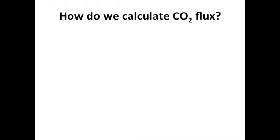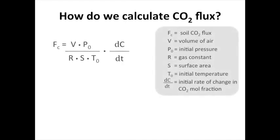Once we have our total volume, we are ready to calculate our CO2 flux. How is this done? The equation looks like this. Fc is our soil CO2 flux that we are going to calculate. V is the total volume that we just calculated in the last step. P0 is the initial pressure, which our instrument measured. R is the gas constant, and S is our surface area of our collar that we measured before. T0 is our initial temperature, which we measured using our temperature probe. And dC/dt is the initial rate of change in the CO2 mole fraction, which is what our instrument measured.